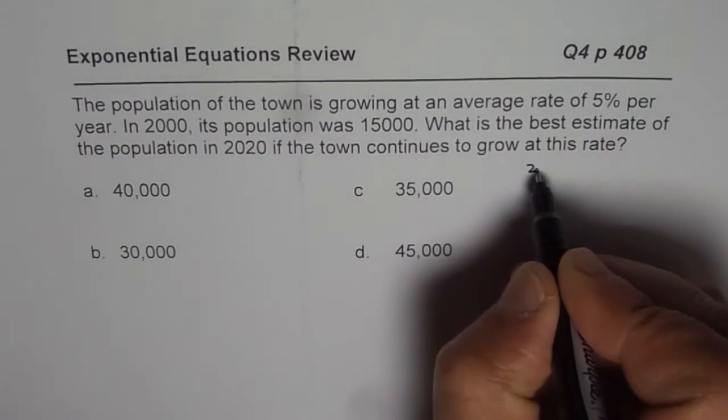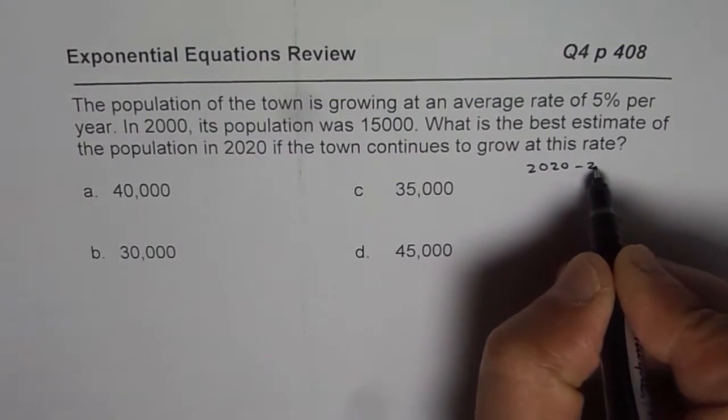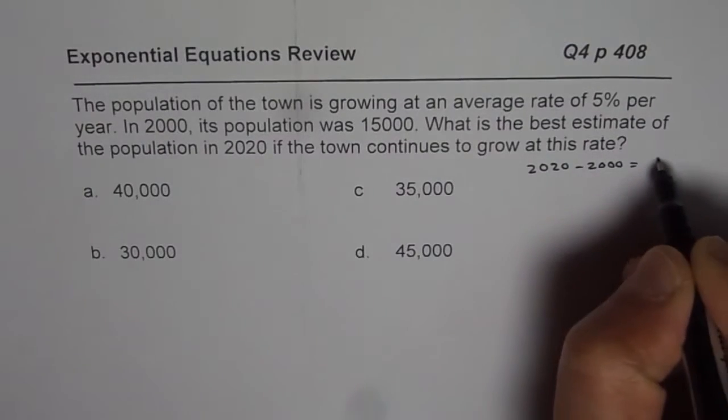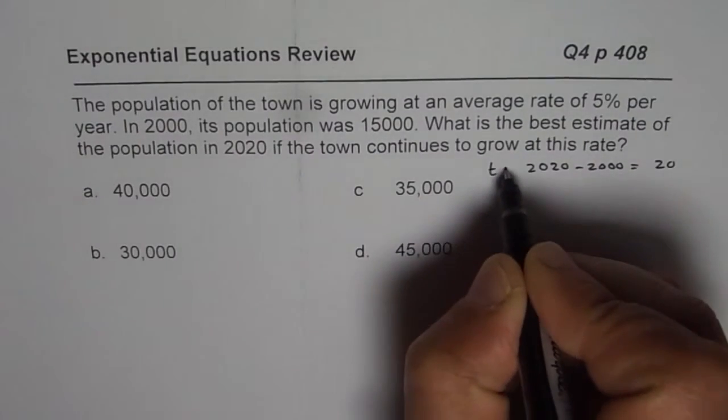What is the best estimate of the population in 2020 if the town continues to grow at this rate? So, let us solve for it and then figure out. So, we are saying 2020 minus 2000, that gives us 20 years. So, T is 20 years for us.